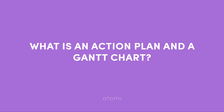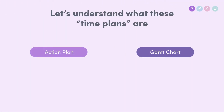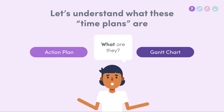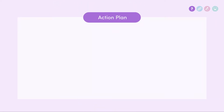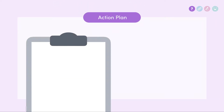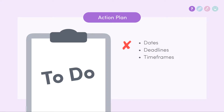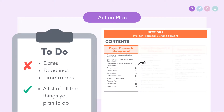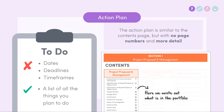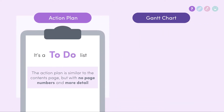Before we get started in making both of these parts of the portfolio, we must form a basis of understanding of what they both are — getting into the mindset before we start a page. The action plan is kind of like a to-do list. You don't put dates, deadlines, and timeframes on it. You just simply write out a list of all the things you are going to do. It's pretty much like the contents page where we wrote out what is in the portfolio, but this time no page numbers and a bit more detail.